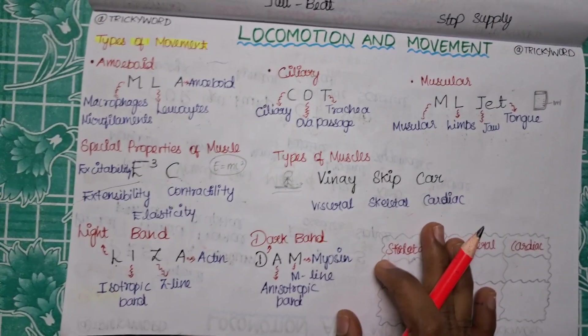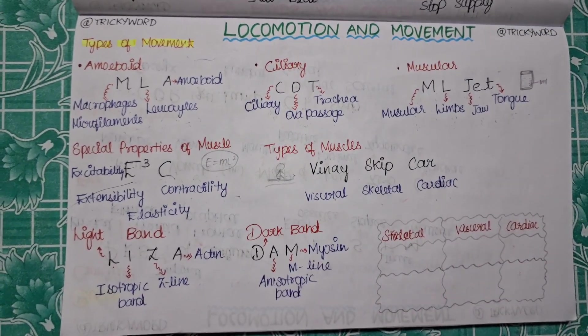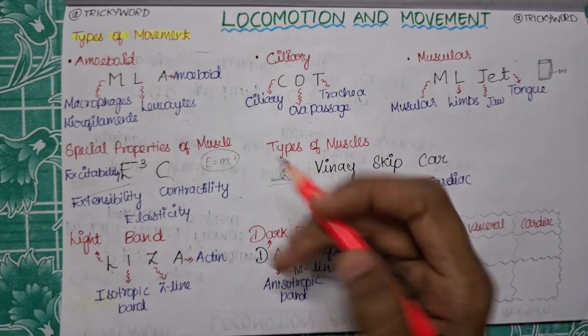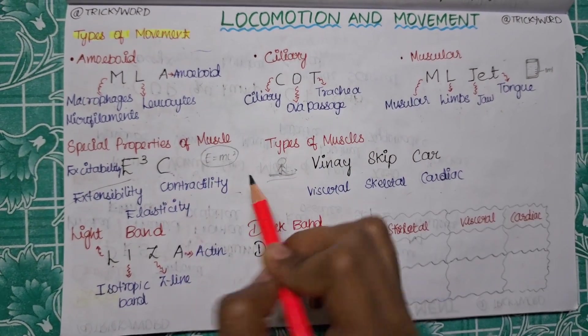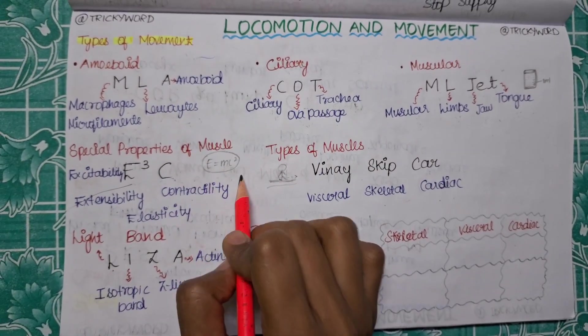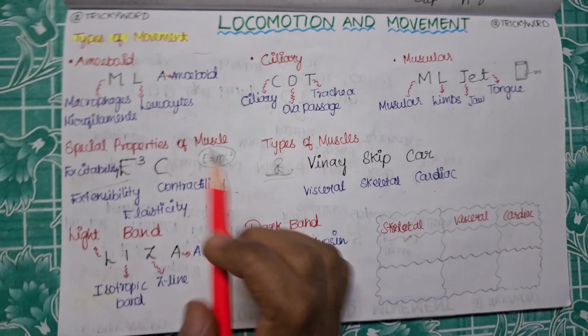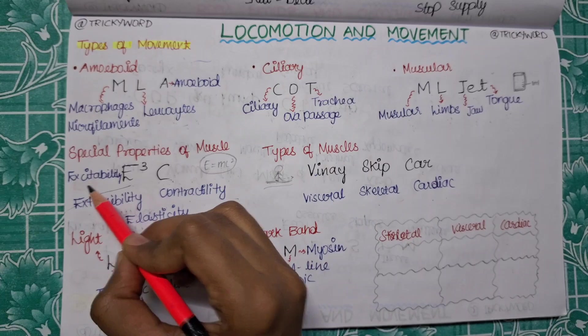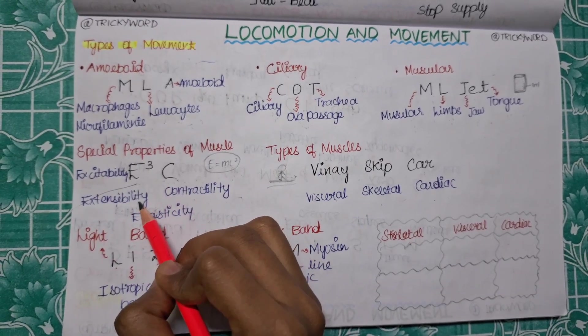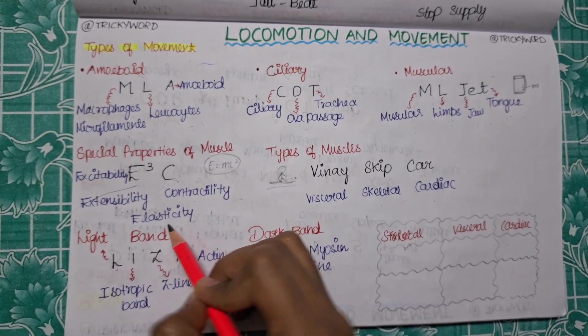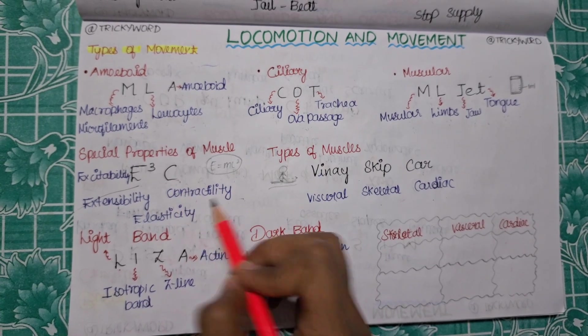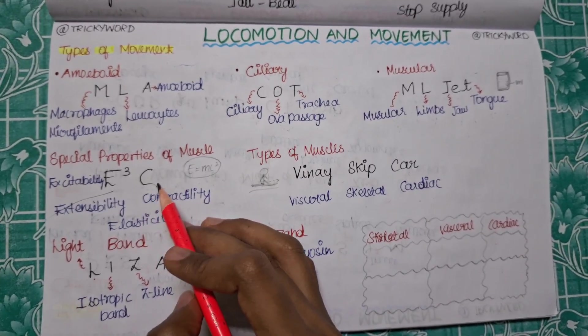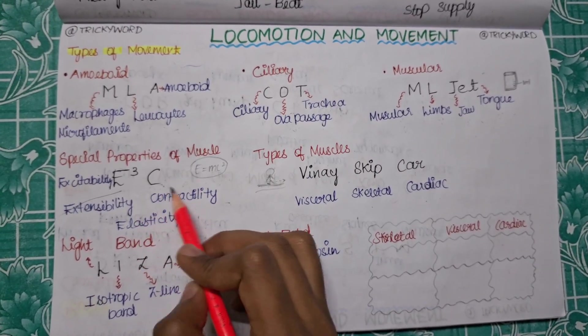Are we clear with the types of movement and the tricks? Now we will talk about the special properties of muscle. It is given by the formula E cube C. It is somewhat similar to your E equals MC squared. E cube C: the first E is for excitability, another E is for extensibility, another E is for elasticity, and C for contractility.